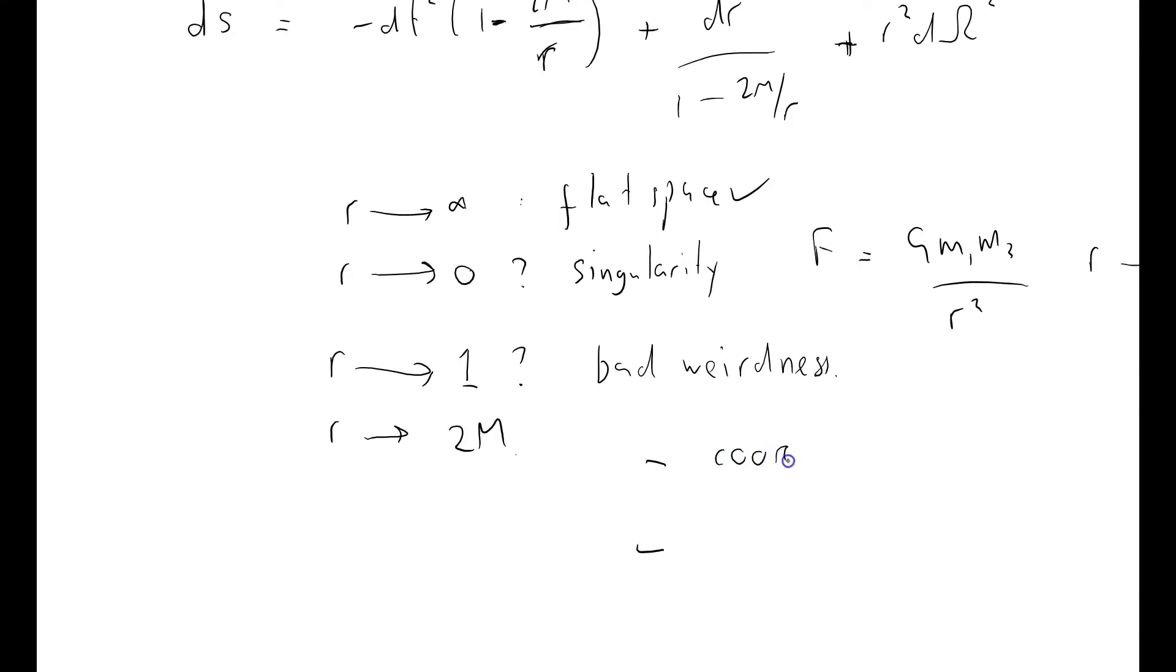It might be a coordinate weirdness, or it might be a physics weirdness. If it's a physics weirdness, it means that there's some kind of kink in space-time that makes our life difficult for objects close to there. It means that when r is approximately equal to 1, there's some badness in the structure of space-time that makes life very difficult for us.